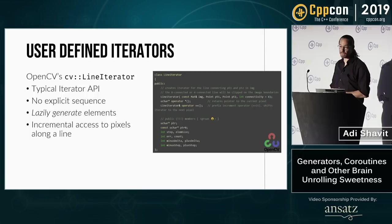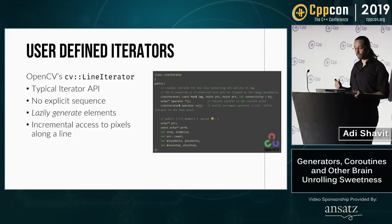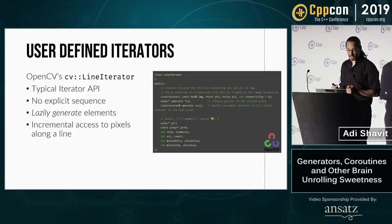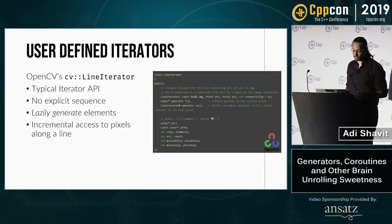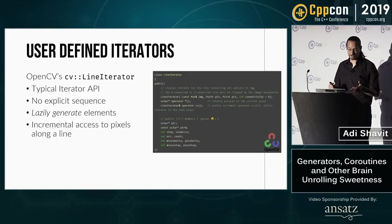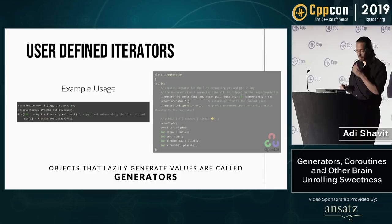I picked OpenCV, which has a type called cv::LineIterator. It's used to iterate over all the pixels on a rasterized line connecting two points. It has a typical iterator object type API. Note that it doesn't have an explicit sequence it's iterating over — it lazily, and this is an important word, lazily calculates the pixel position when the iterator is incremented, implementing various Bresenham algorithms for different conditions.